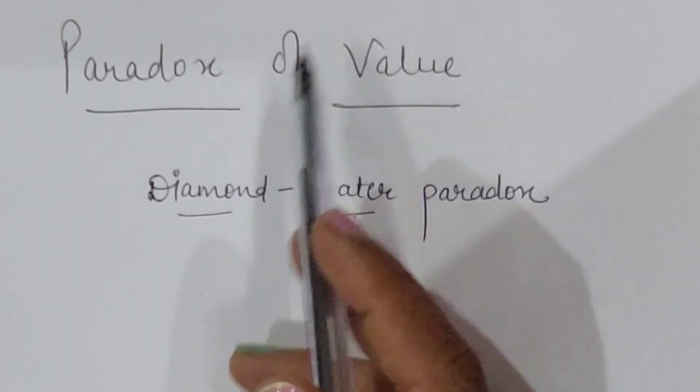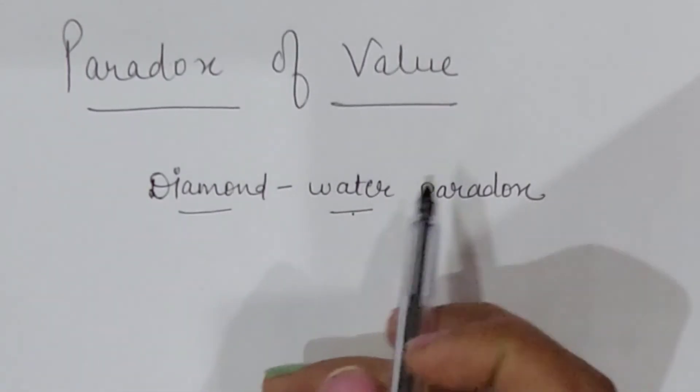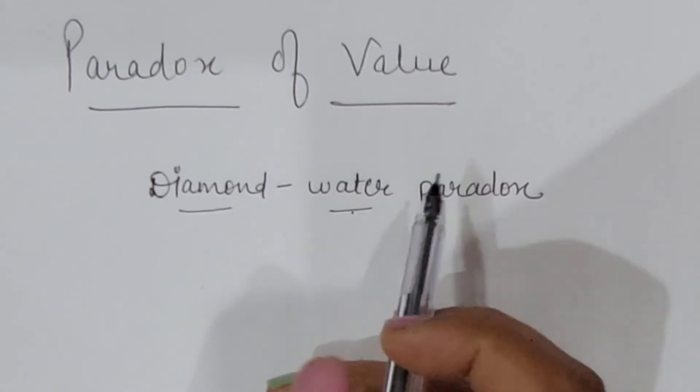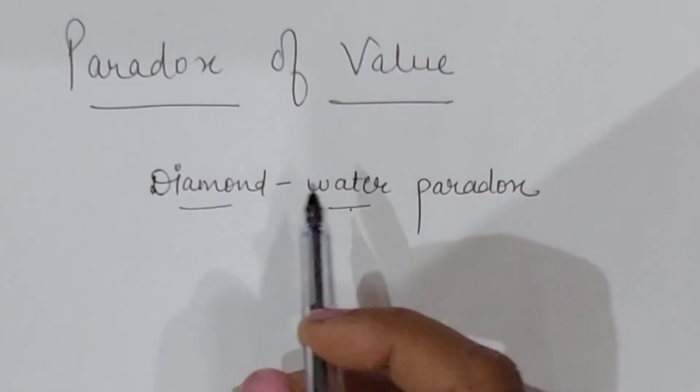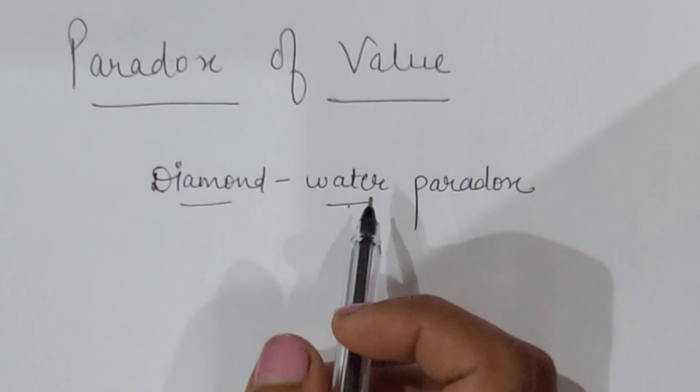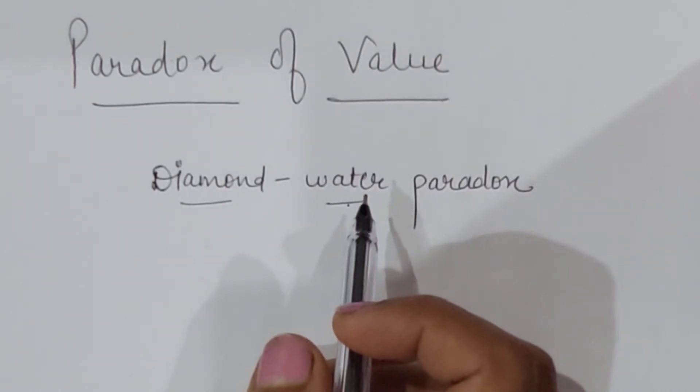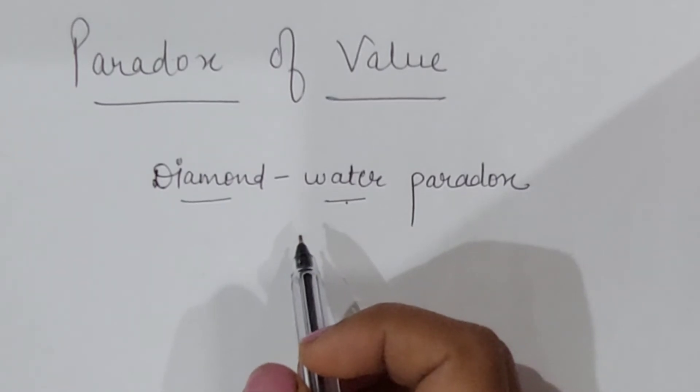So this situation is known as paradox of value or diamond water paradox. How we can explain it? This is based upon difference of total utility and marginal utility as I mentioned earlier. Price of a commodity is determined by its marginal utility, not total utility.